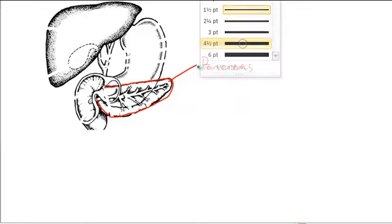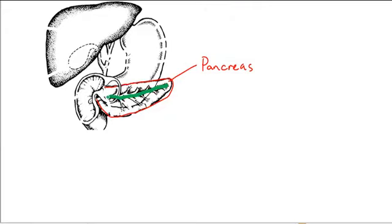And there's two key details of this. You have the pancreas itself, and then you have all these little tubules that join together and eventually feed into the small intestine.